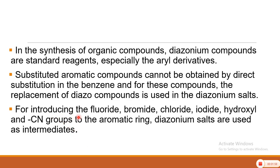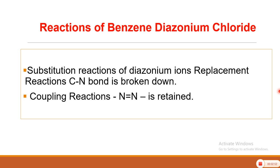For introducing fluorine, bromine, chlorine, iodide, hydroxyl group, or cyanide group to the aromatic ring, Benzene Diazonium salts are used as intermediates. This topic is the basis of several synthetic organic compounds in which Benzene Diazonium salt is used as an intermediate. The aryl derivatives are important for synthetic organic chemistry because you cannot substitute benzene by a desired group or atom directly — so Benzene Diazonium salt works as the intermediate.